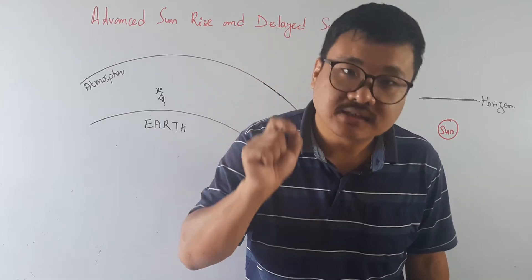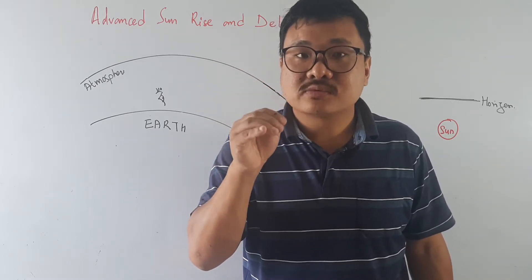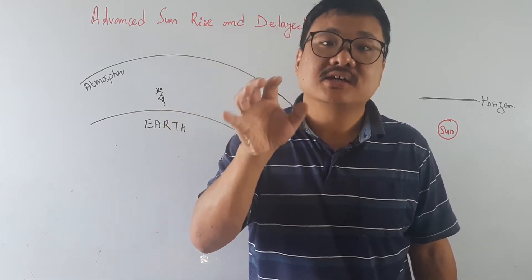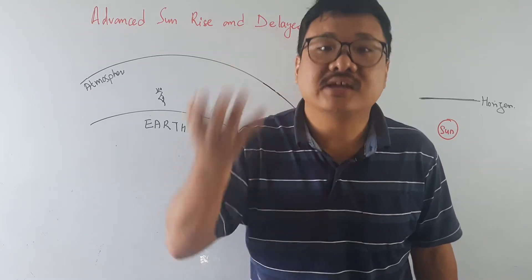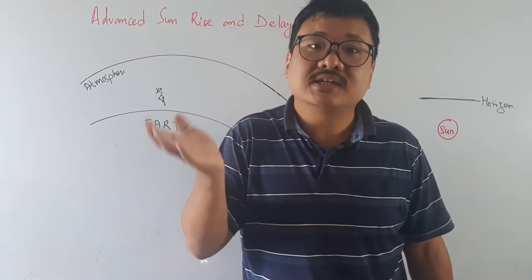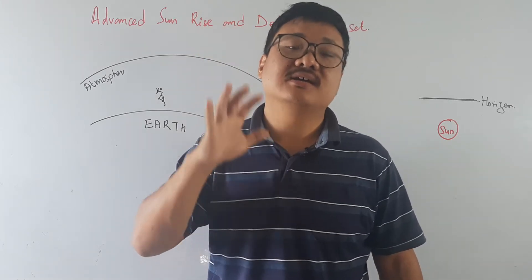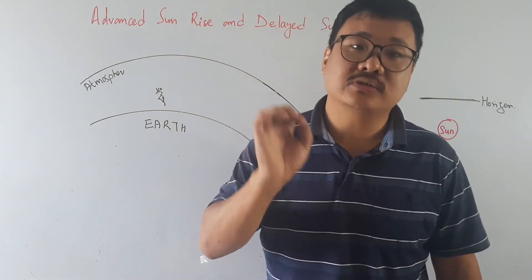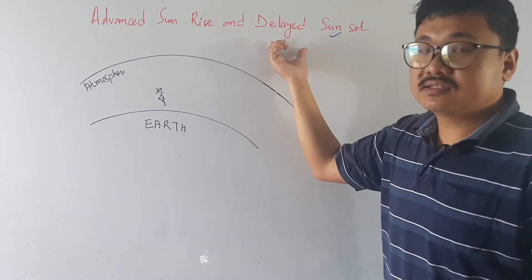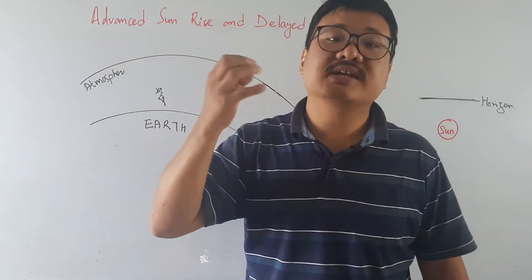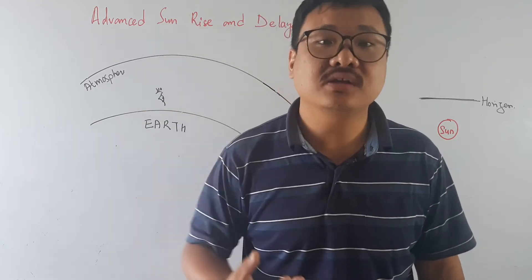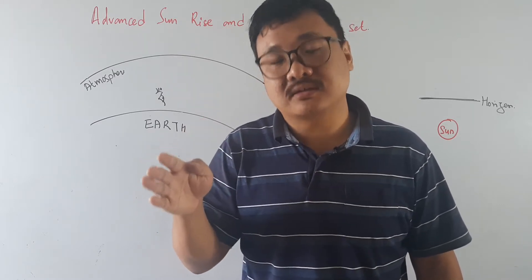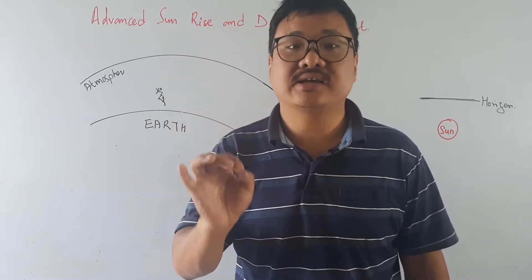So what is the delayed sunset? The sun is visible to us about two minutes after the actual sunset. This means when the sun has set, we can still see the sun for two minutes. This is what we mean by advanced sunrise and delayed sunset.